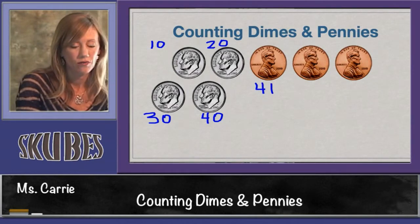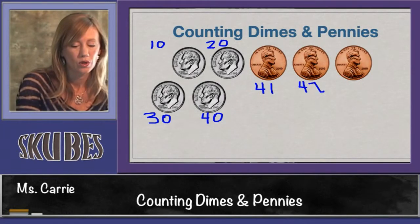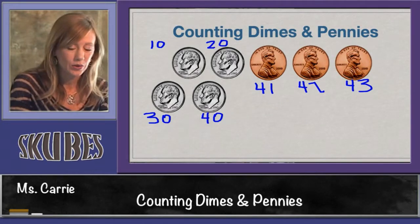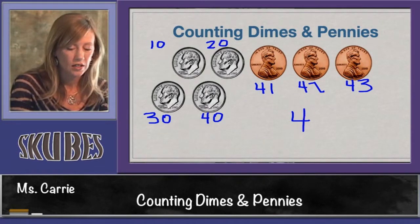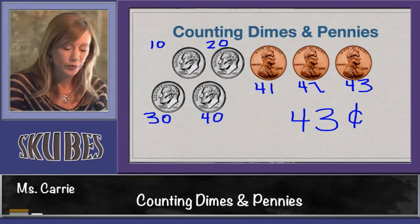Forty-two, forty-three. This group of coins equals forty-three cents. Let's try another group.